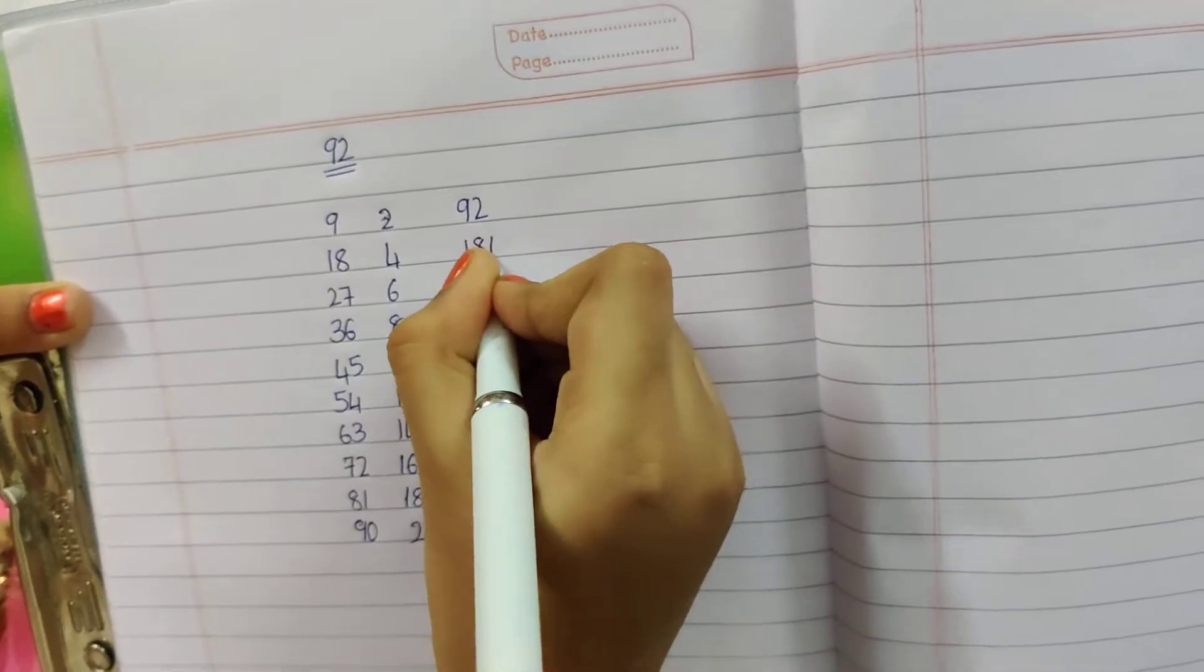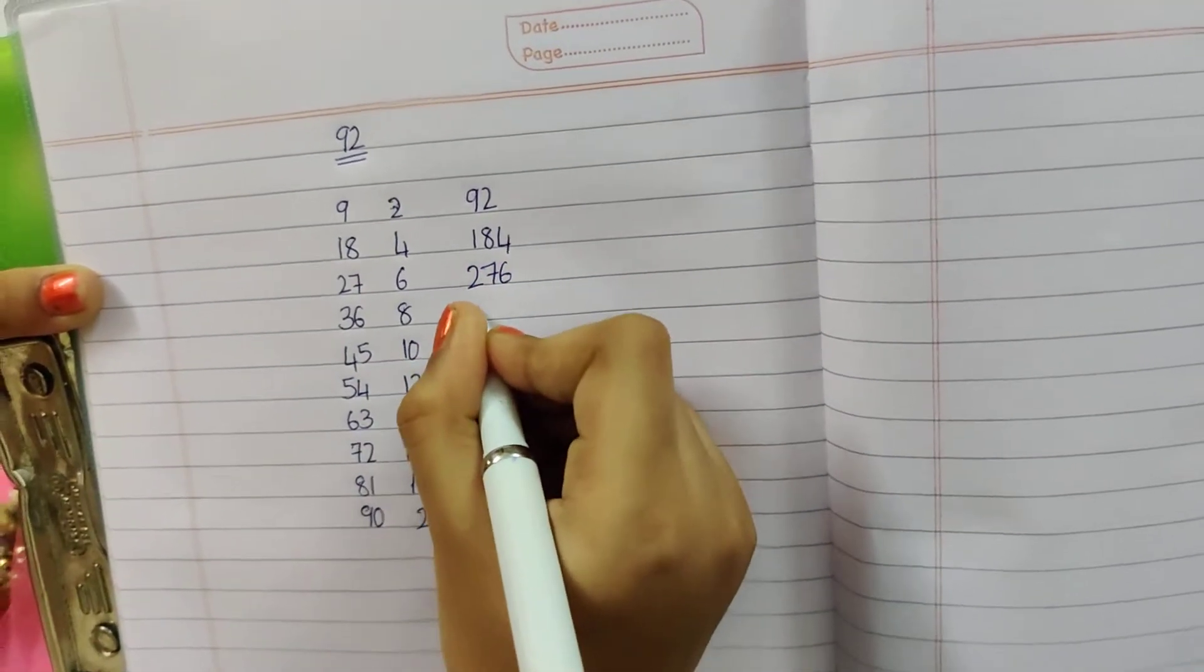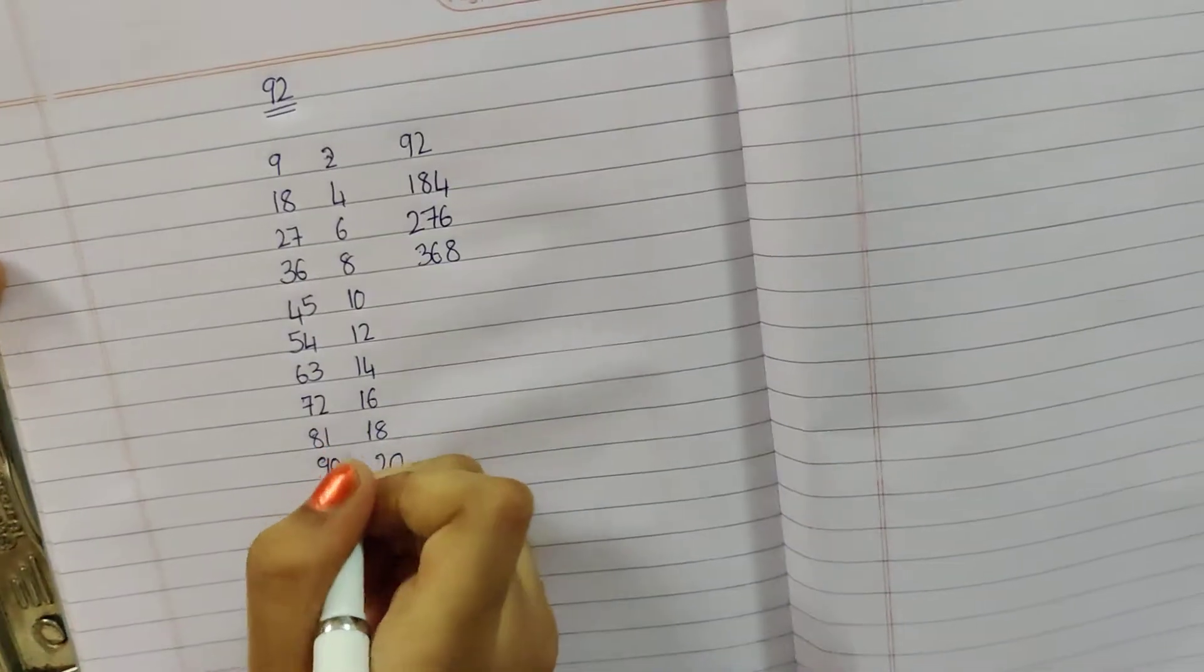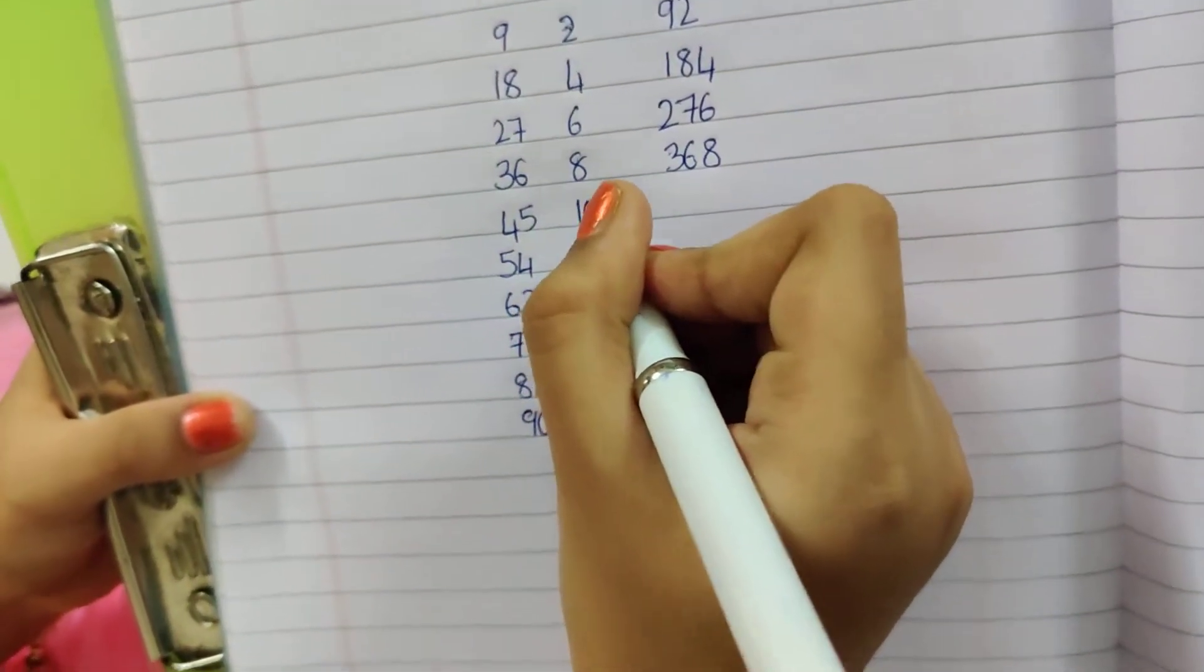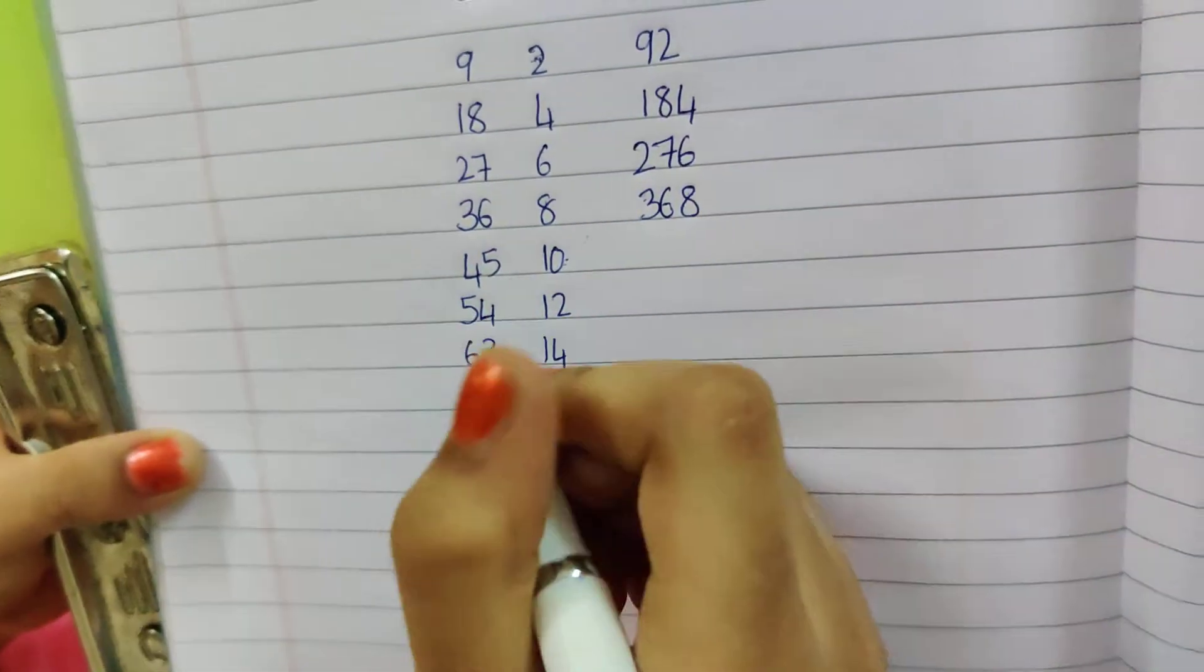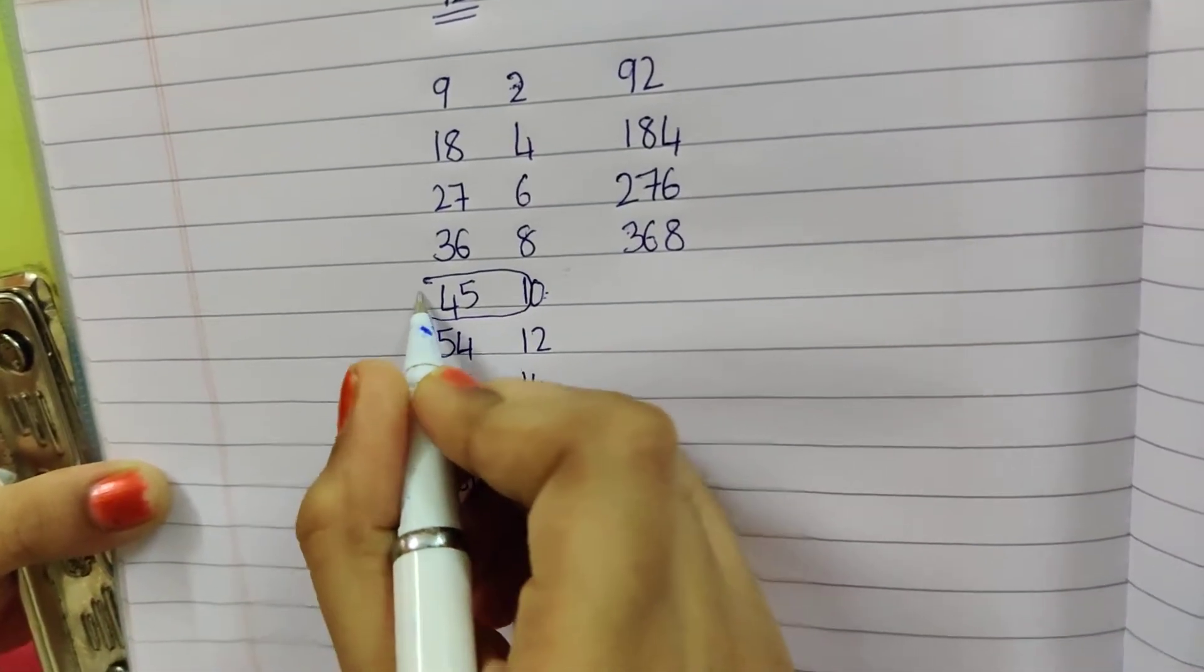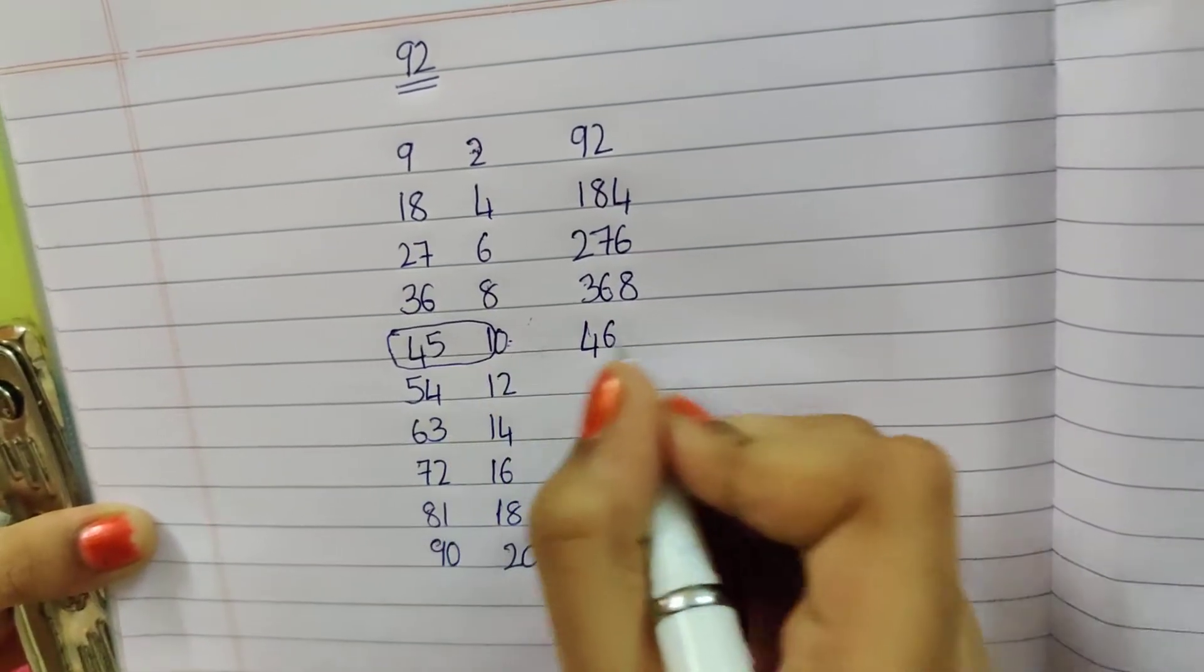92, 184, 276, 368. Here is 2 digit number. 45 plus 1, 46. Add this 0.